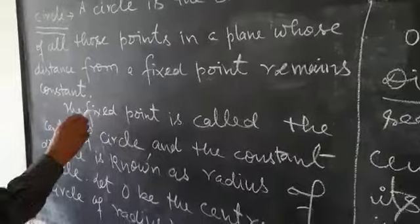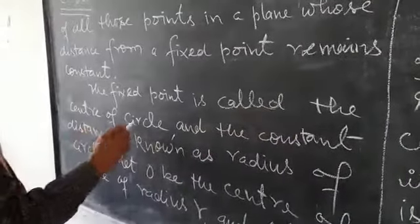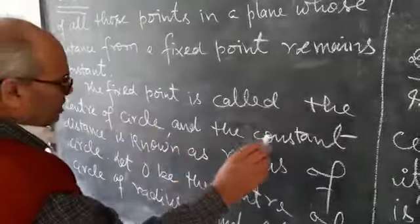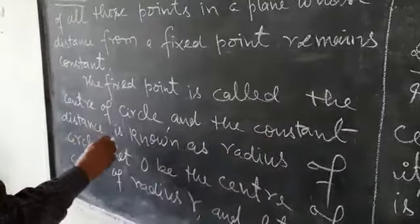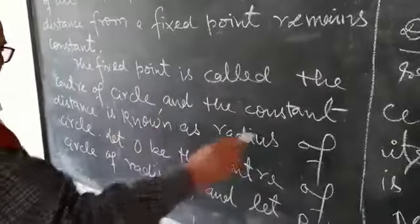The fixed point is called the center of a circle and the constant distance is known as radius of a circle.